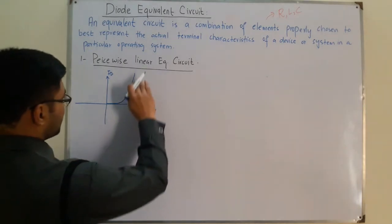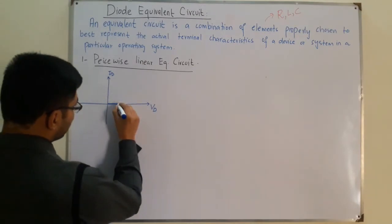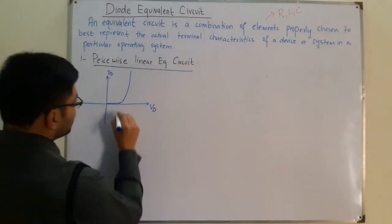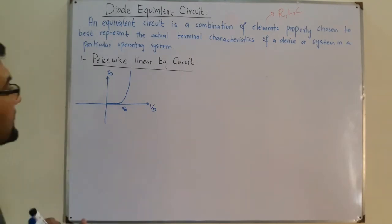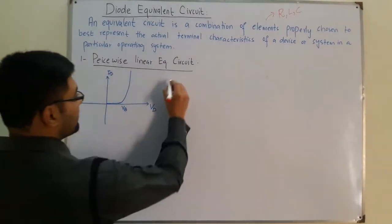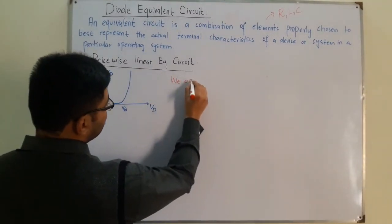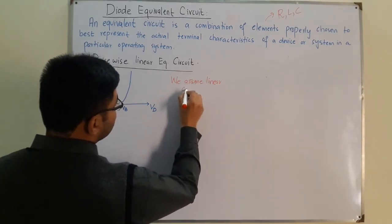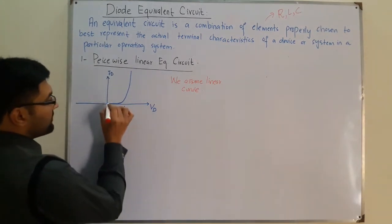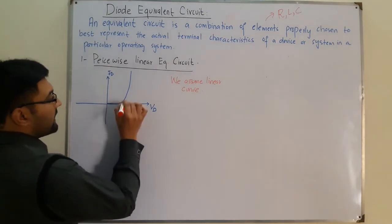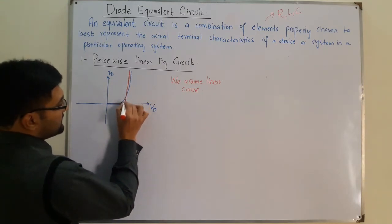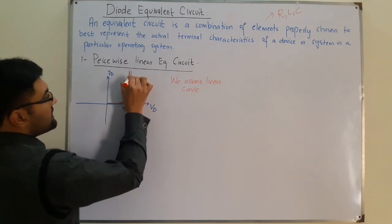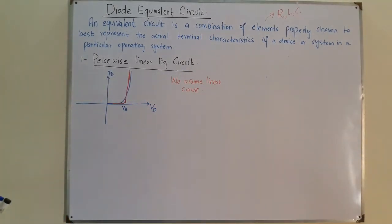In the piecewise linear equivalent circuit, we assume this graph to be linear. So we have the curve going until VB and then a linear curve after that. It differs from the actual curve, but it can be approximated this way.